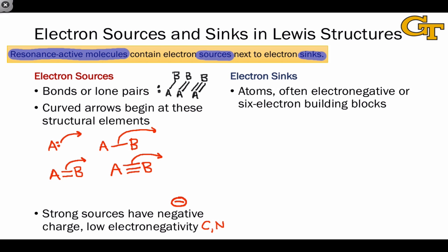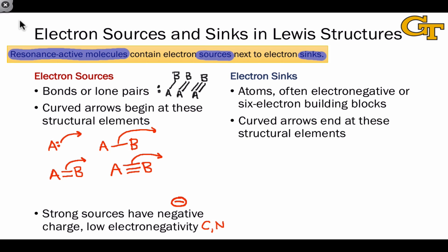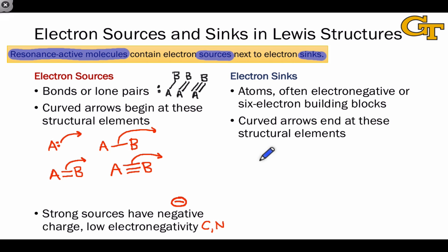Electron sinks are atoms that accept a pair of electrons, and these are often electronegative atoms — in contrast with the low electronegativity condition on electron sources. Curved arrows end at these structural elements, and there are a few different ways that we can make this happen. For six-electron building blocks, we can add a pair of electrons to the building block to satisfy the octet rule, and you'll see electron-pushing arrows directed at these structural elements.